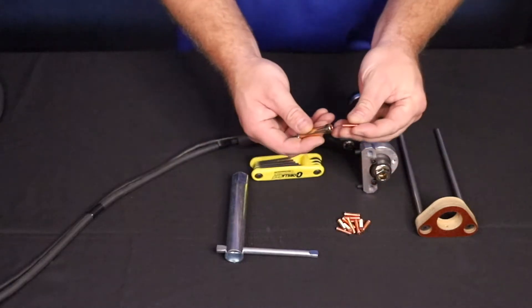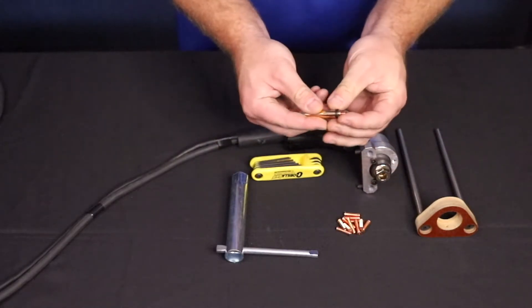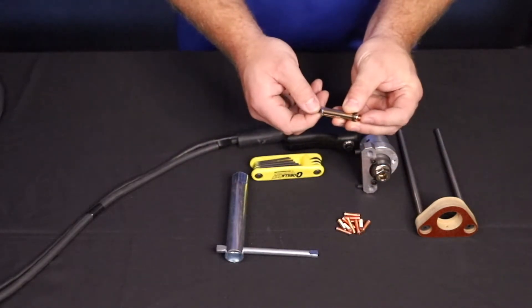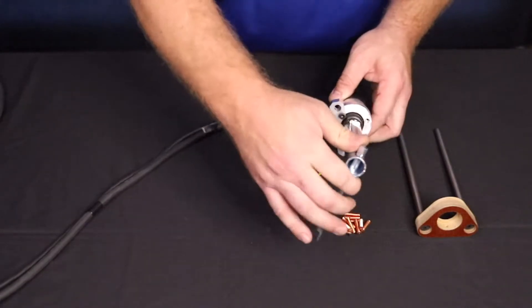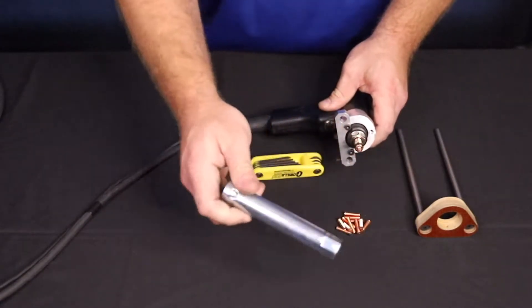Insert the collet into the gun shaft until it bottoms, then tighten the retaining nut until snug. Please note that failure to tighten this properly will result in damage to the gun shaft and collet.